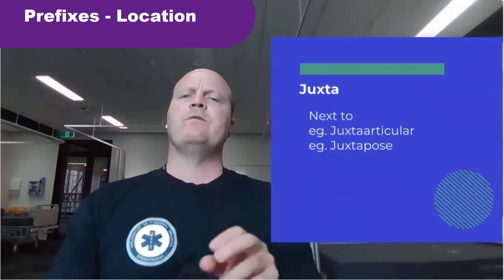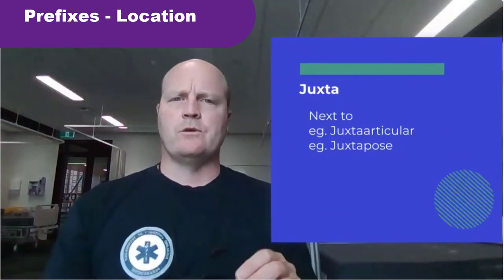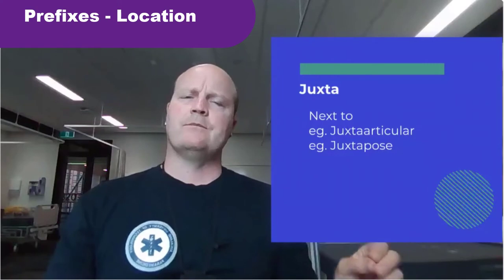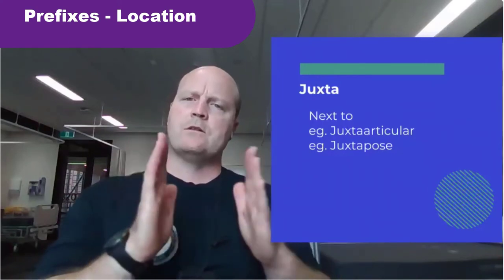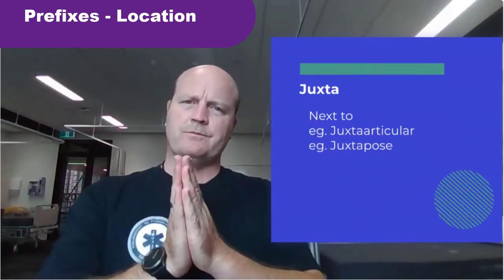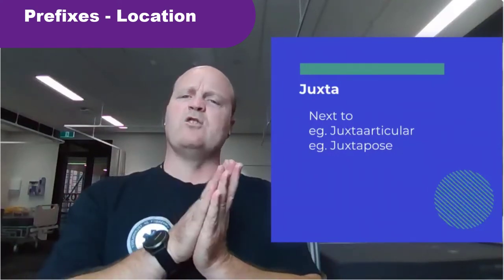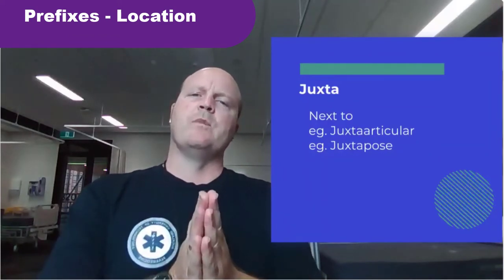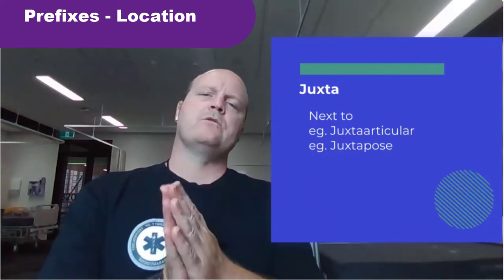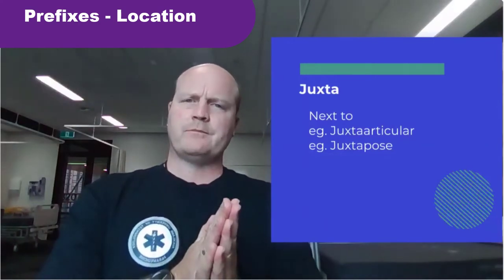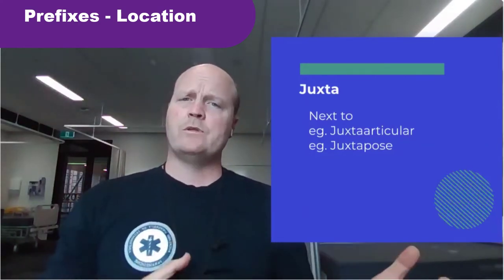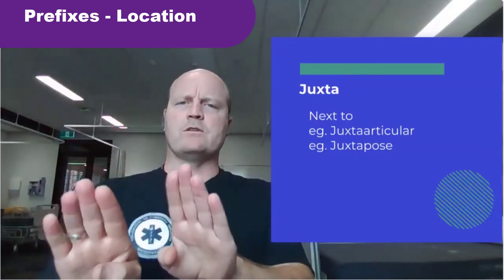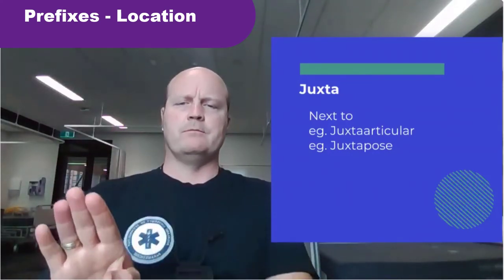Juxta — whenever we see juxta, it means next to. So juxtaarticular — articular means to articulate, to touch, so a joint would be articular — juxtaarticular would mean next to or beside the joint. And juxtapose is where we put two things side by side so we can compare them.